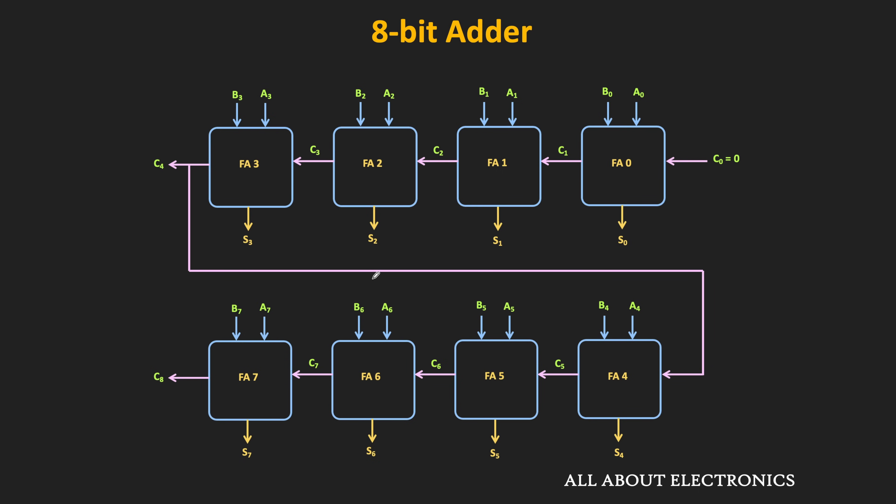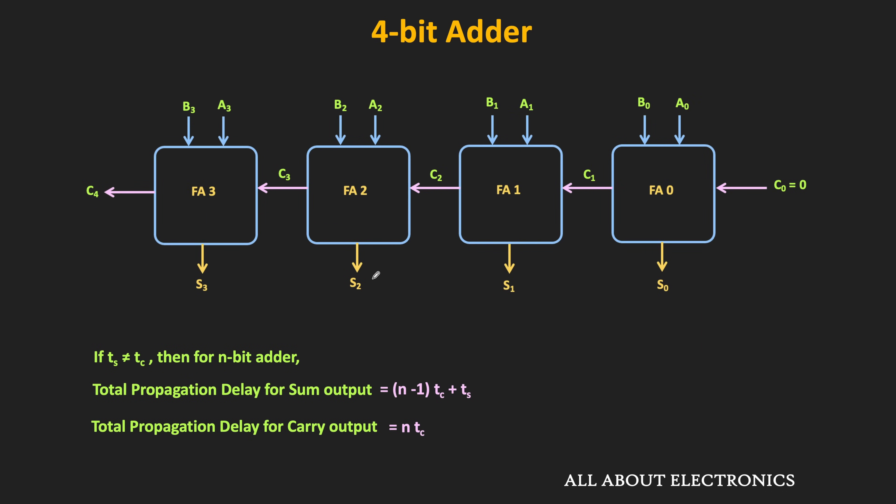This increased delay reduces the number of additions that can be performed per second, which is the key limitation of the ripple carry adder. To reduce propagation delay we need to minimize Tc and Ts by optimizing the design and selecting logic gates with minimum propagation delays. However, we cannot reduce gate propagation delay below a certain limit, so this issue can be alleviated by using the look-ahead carry adder, which we will cover in the next video.